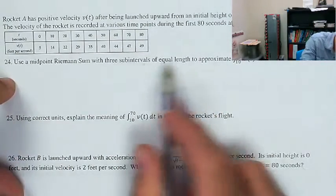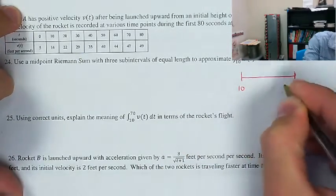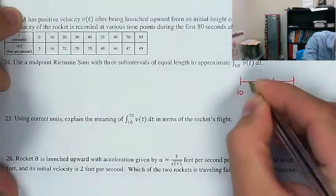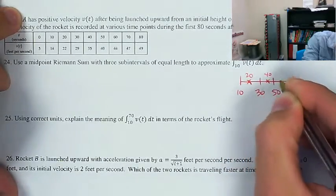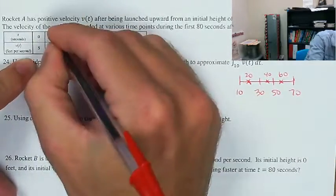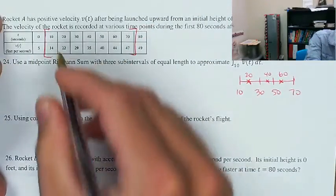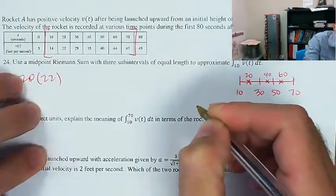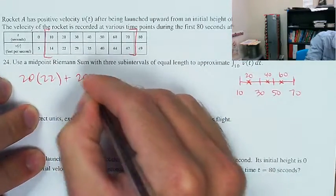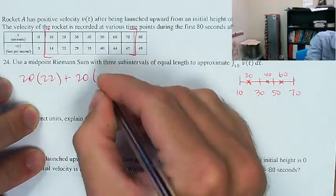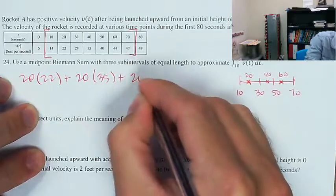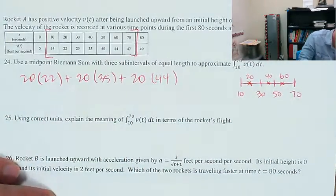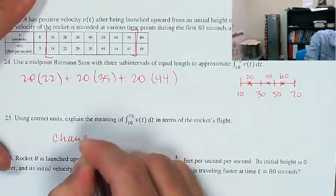Use a midpoint Riemann sum with three subintervals of equal length to go from 10 to 70 on v. The range is 60, split into thirds gives width 20, so midpoints are 20, 40, and 60. Subintervals: 10 to 30 width 20 with height v(20) = 22; plus 30 to 50 width 20 with height v(40) = 35; plus 50 to 70 width 20 with height v(60) = 44. This approximates change in position, but you don't need to know that yet.